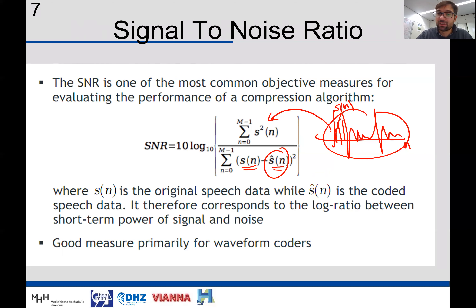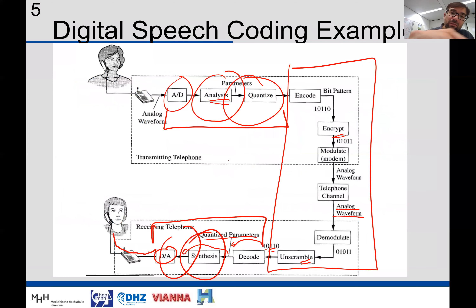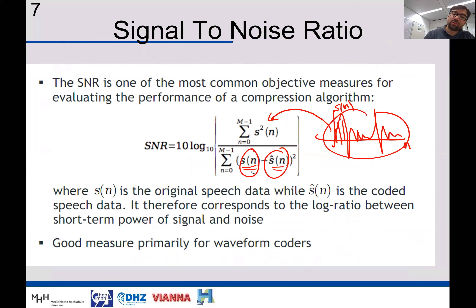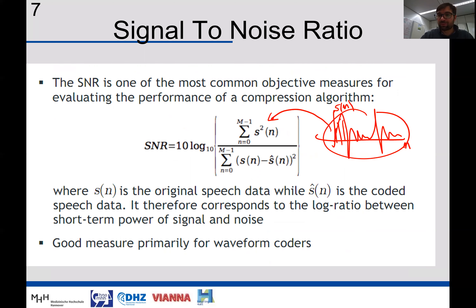The denominator contains the difference between the original signal s(n) and the compressed-then-decompressed signal s'(n) received at the receiver. This difference is the error signal, and we want it to be as low as possible. We compute the power of the error signal by squaring each value and summing across time. The ratio of signal power to error signal power, expressed in decibels using 10·log₁₀, gives the Signal-to-Noise Ratio. This measure is primarily a good measure for waveform codecs, as we will see.